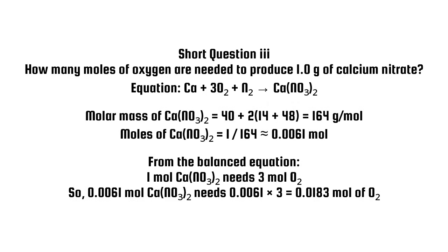Short question 3. How many moles of oxygen are needed to produce 1.0G of calcium nitrate? Molar mass of Ca(NO3)2 equals 40 plus 2 times 14 plus 48 equals 164 grams per mole. Moles of Ca(NO3)2 equals 1 divided by 164 almost equals 0.0061 mole. From the balanced equation, 1 mole Ca(NO3)2 needs 3 moles O2. So, 0.0061 moles Ca(NO3)2 needs 0.0061 times 3 equals 0.0183 moles of O2.